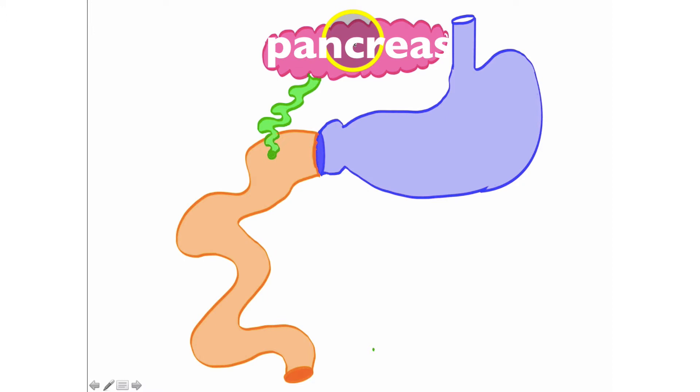Here we have the pancreas, which we've talked about at length mainly due to its endocrine function. It releases hormones such as insulin, glucagon, among others. And the endocrine function of the pancreas is located in regions known as the islets of Langerhans.